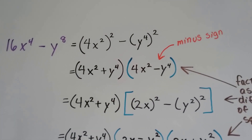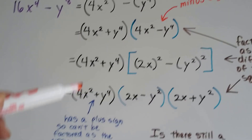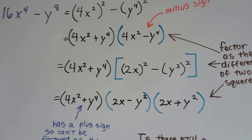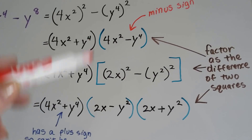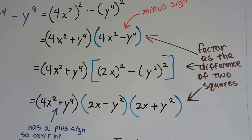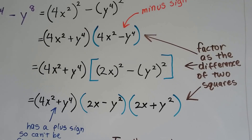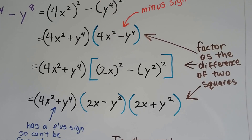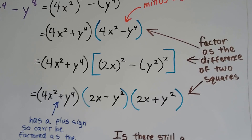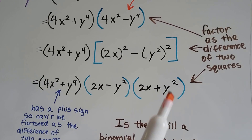It's the difference of two squares. This one's got a minus sign, so we could do it again. This guy with the plus sign goes along for the ride — he can't be factored as the difference of two squares. The ones in the blue brackets and parentheses are the ones we're going to factor again. What times what could be 4x squared? 2x — 2x times 2x is 4x squared. And y squared times y squared gives us y to the 4th. So we write it as 2x minus y squared, and 2x plus y squared.